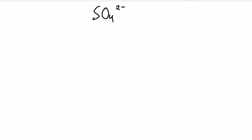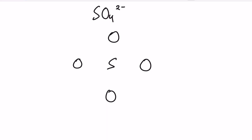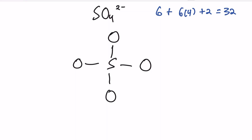Now let's draw the Lewis Dot diagram for SO4 2−, the sulfate ion. We draw our central atom (sulfur) surrounded by the four outer oxygen atoms. Adding up valence electrons: sulfur has six, oxygen has six and we have four oxygens, plus two extra electrons due to the two-minus charge of the ion, giving a total of 32. We connect each oxygen to sulfur with a single bond, drawing four bonds total, and subtract eight electrons, leaving us with 24.